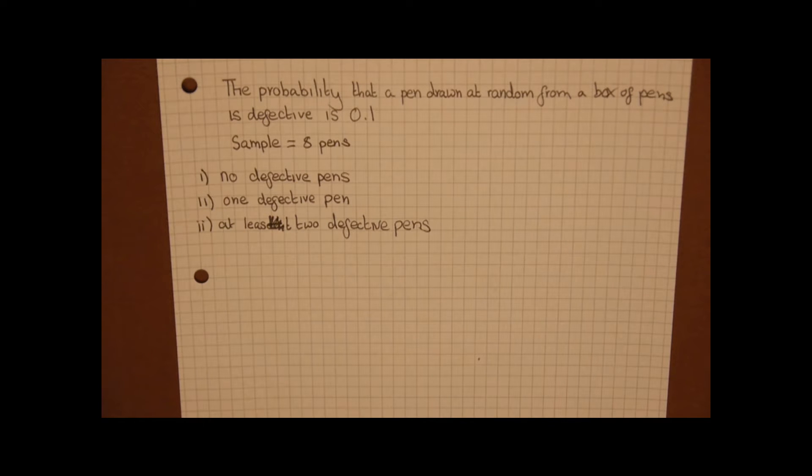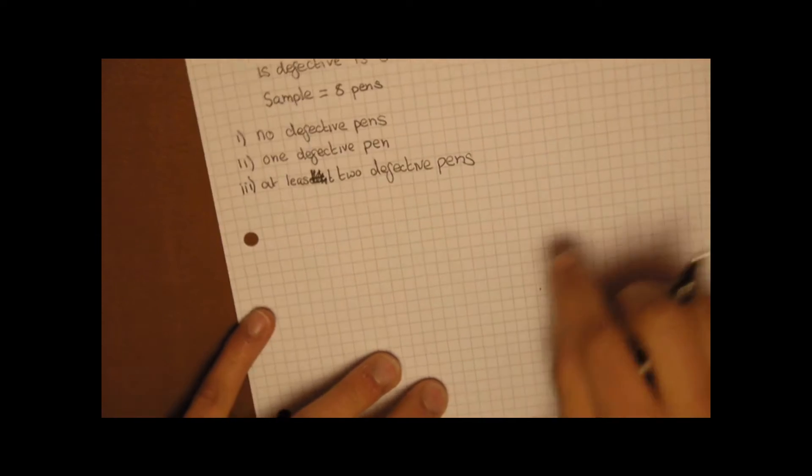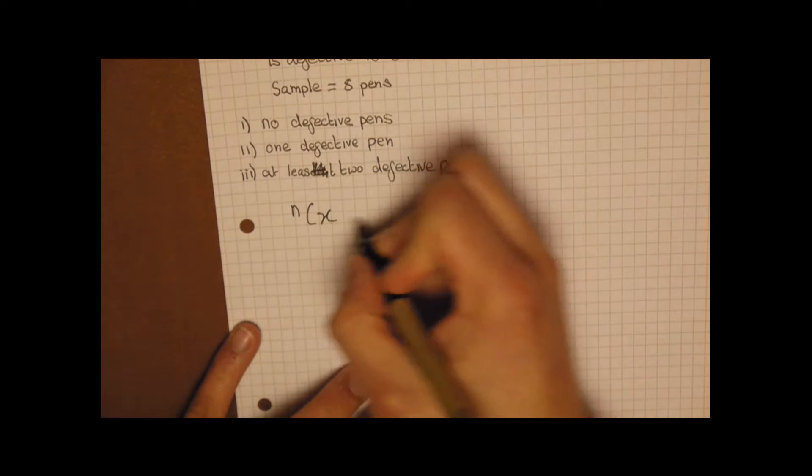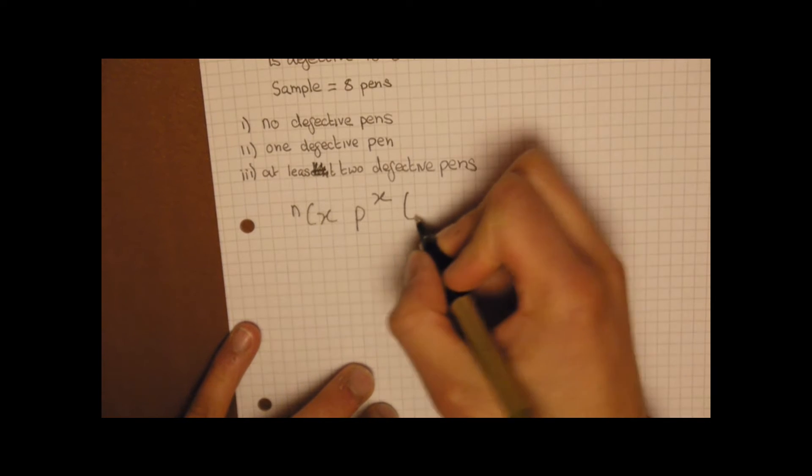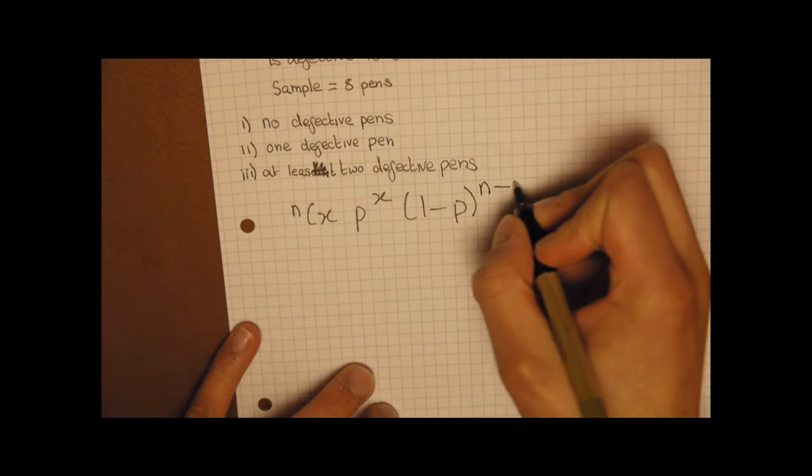Now there's one thing you always need to do when trying to solve binomial distribution, and that's to use the formula which I'm going to write now. The formula is nCx times p to the x times 1 minus p to the power of n minus x.